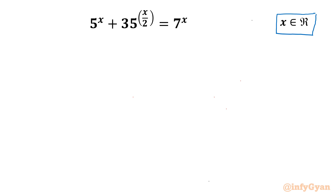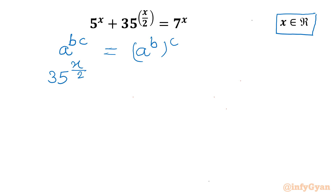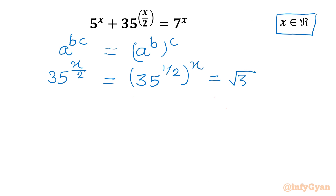Let's get started by writing one powerful exponential law: a^(b·c) = (a^b)^c. So 35^(x/2) can be written as (35^(1/2))^x, which is equal to (√35)^x. Let us put this value into our equation.